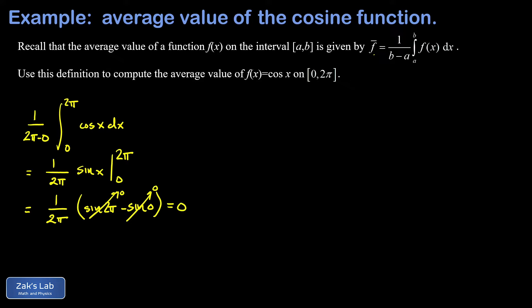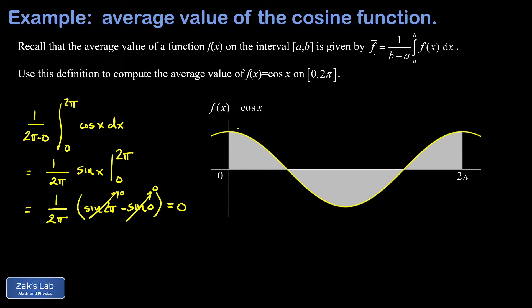Now when we bring in the picture of the cosine function, our average value makes a lot of sense. The total signed area enclosed by the cosine function over one period is zero because it spends the same amount of time above the x-axis as it does below.